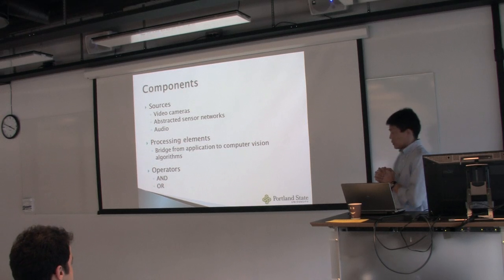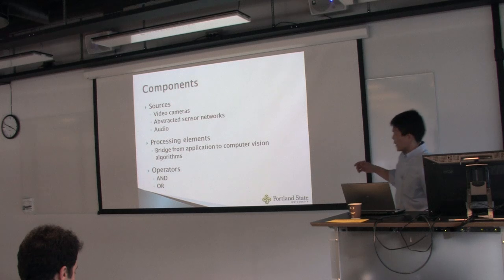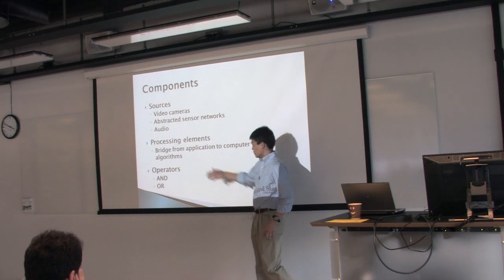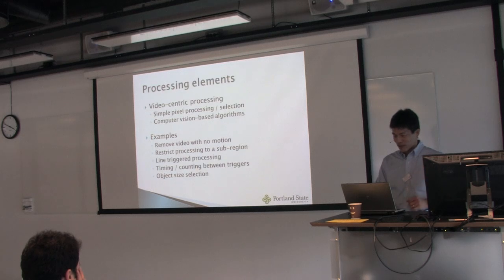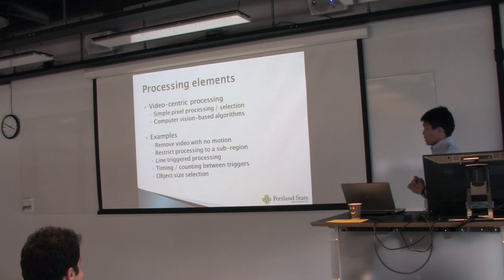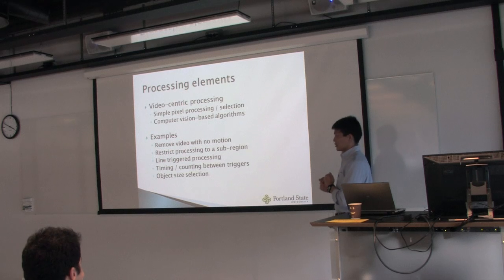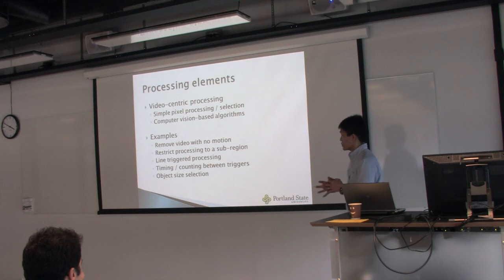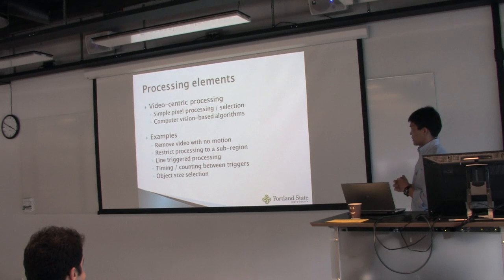We have basically three types of components: sources, which are video cameras or abstracted sensor networks; processing elements, which actually do the work; and basic logical operations — AND and OR, though we've thought about NOT and may include it later. Processing elements do things like simple pixel processing for scene detection, removing video with no motion, restricting processing to a sub-region to make computer vision more scalable, line trigger processing, object size selection, and so on.